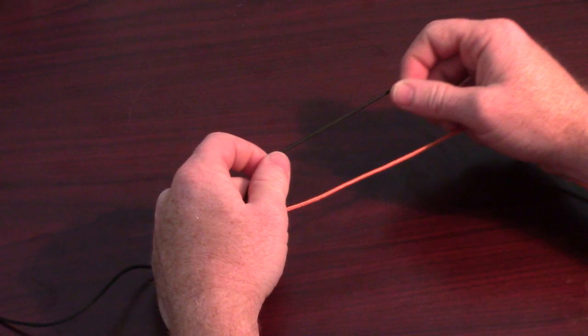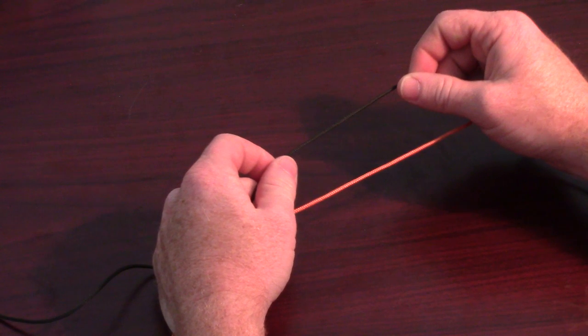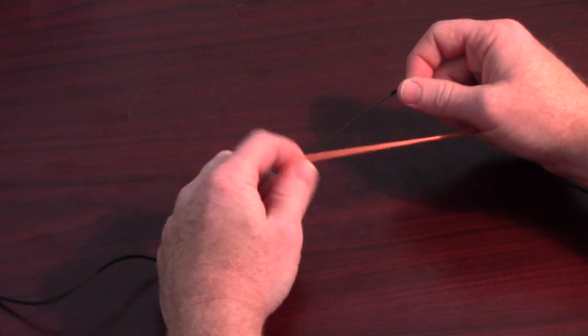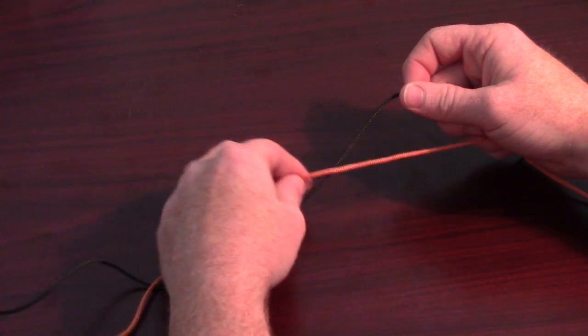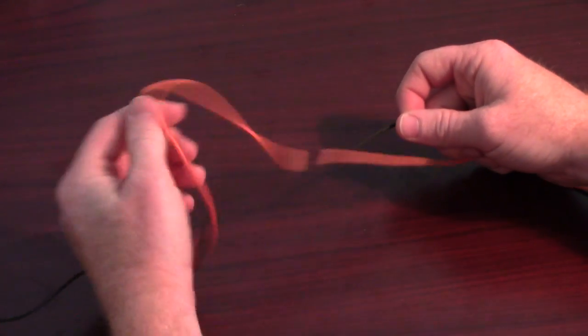Start by holding both lines parallel to each other, giving yourself room to work with the tag ends. Then begin twisting the tippet around your leader 4-5 times.